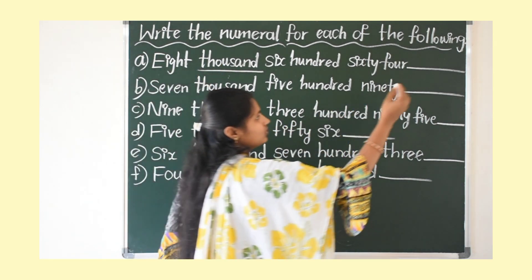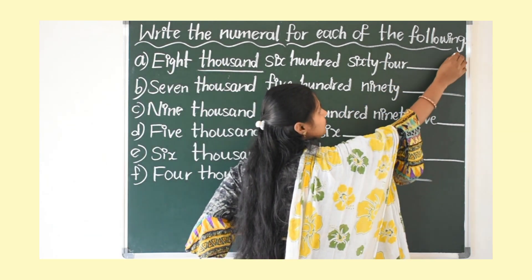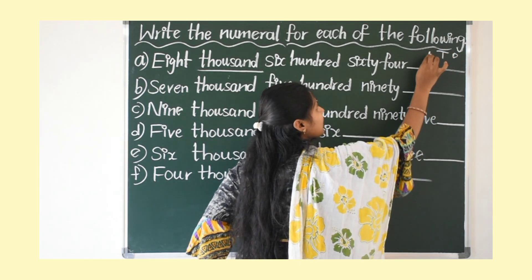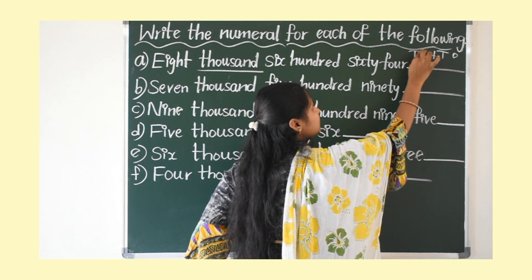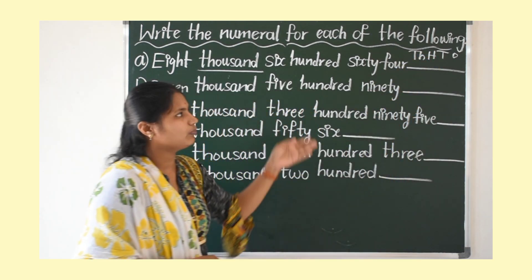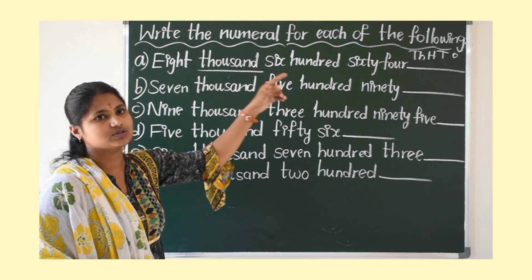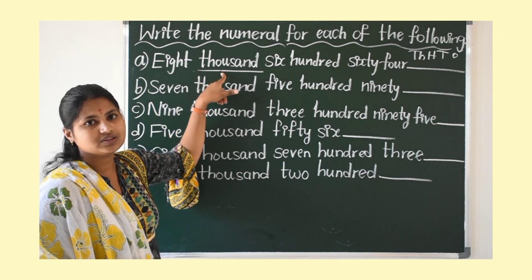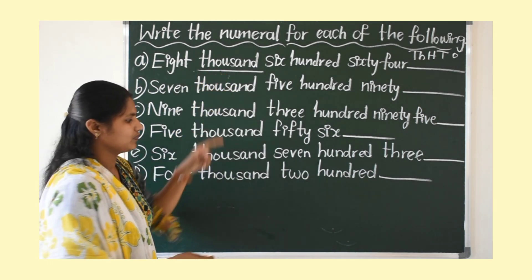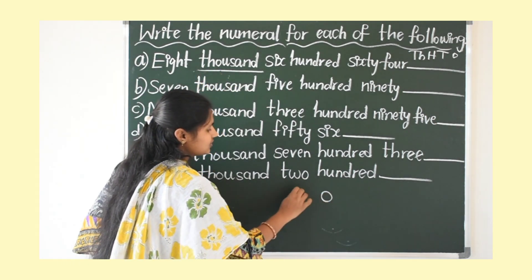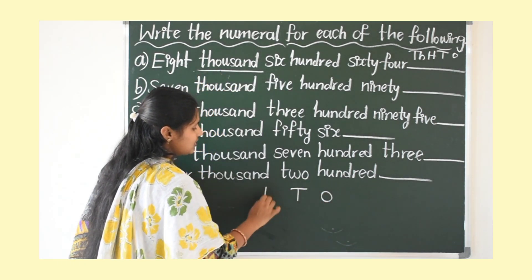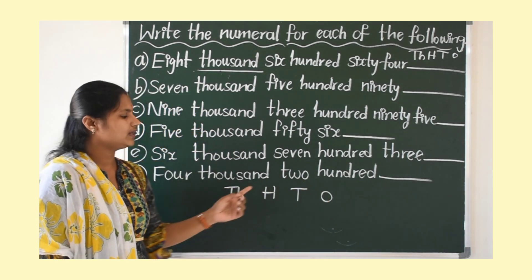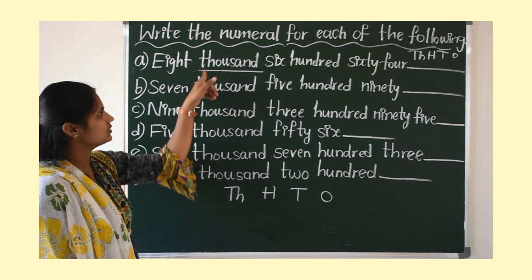First write down the place values: 1's place, 10's place, 100's place, and 1000's place. Why are we writing up to 1000's place only? Because the number name started with 1000. I am writing here: 1's, 10's, 100's and 1000's — from 1's place up to 1000's place.